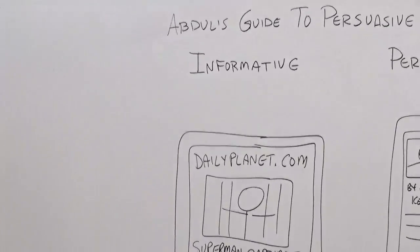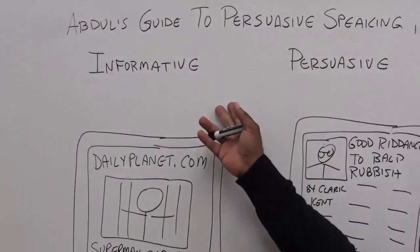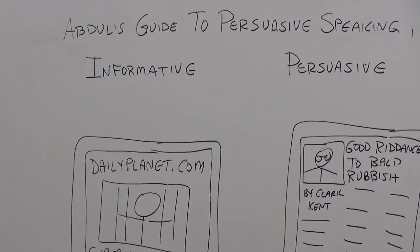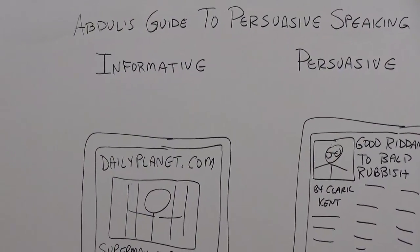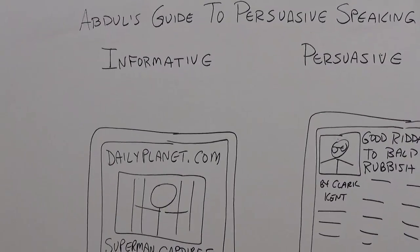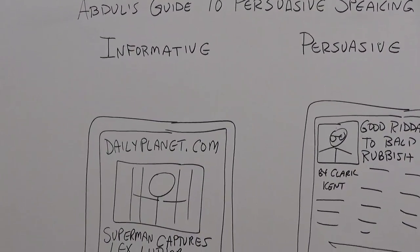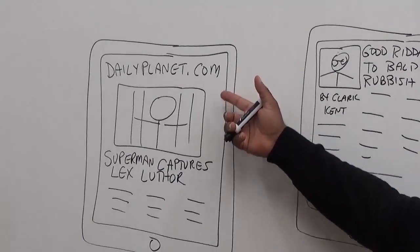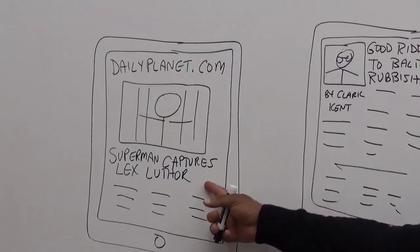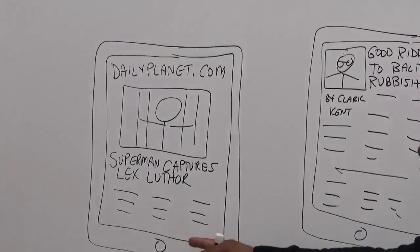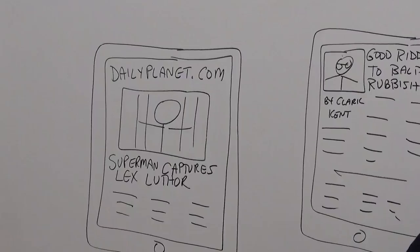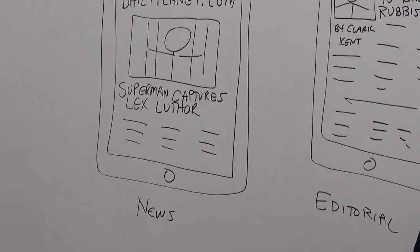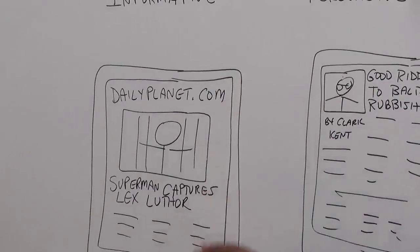To date, all the speeches you guys have done have been informative speeches. You've been basically giving the audience new and useful information about yourself or about a topic, but you've been playing it straight down the middle, just giving them that information. In a way, you've kind of been like a newspaper writer. This is a dailyplanet.com news site — there's a story about how Superman captures Lex Luthor. The types of things we find in a news story are who got captured, what happened, how it happened, why, where — just the straight facts.